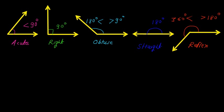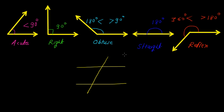Now let us take one diagram and in this diagram, just find out different acute angles, right angles, obtuse, straight and reflex angles. We will use the same color to mention these angles. Here you can see that this angle is less than 90 degree, so opposite to this angle, this is also less than 90 degree, so all these two angles are the acute angle. Here also in this case, we have two acute angles.